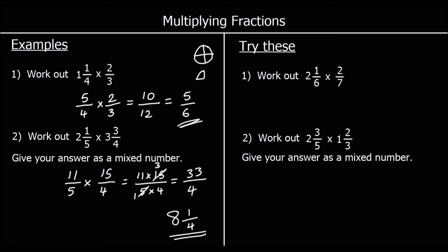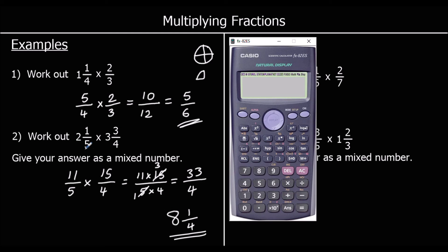Now let's quickly show how you would do this on a calculator. To write two and one-fifth times three and three-quarters, use the shift-fraction button to get the mixed number format. Enter two and one-fifth, press times, shift-fraction again, and enter three and three-quarters. Press equals and you get thirty-three over four. To convert to a mixed number, press shift then the S-to-D button, and it changes to eight and one-quarter.